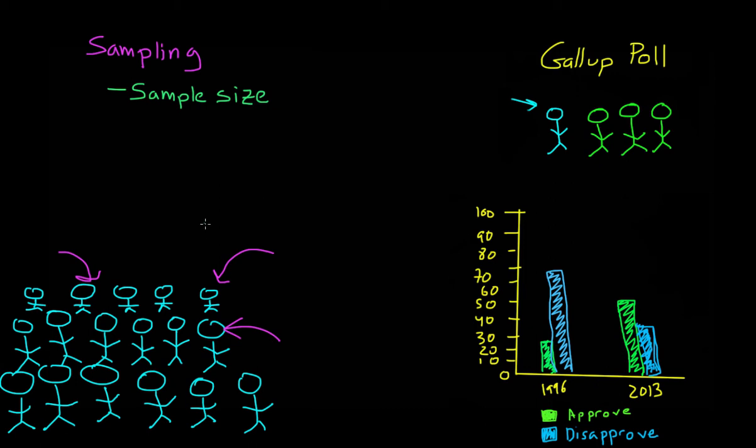We also have to be careful that the population that we're sampling from is actually indicative of what we want to study. So we have to define the population before we can sample from it.